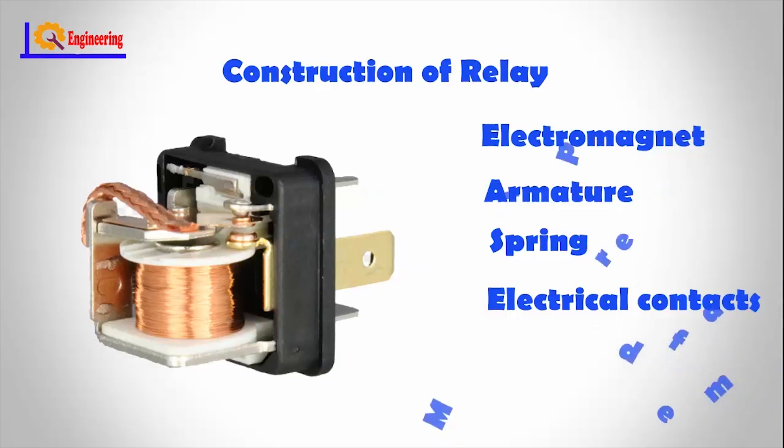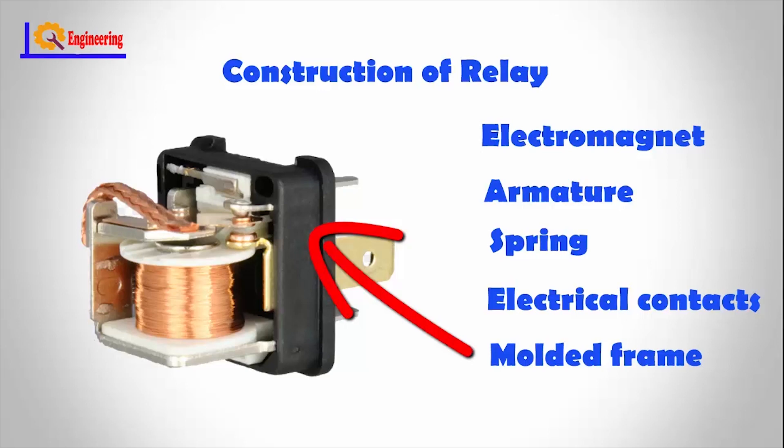Number 5: Molded frame. Relays are covered with plastic or glass so that we can observe them working without opening or removing the cover.